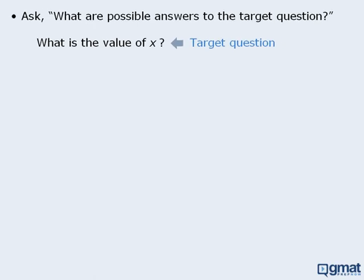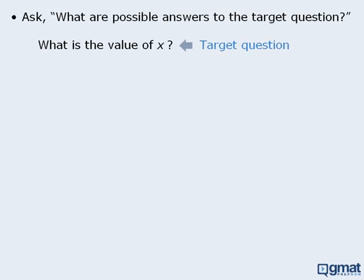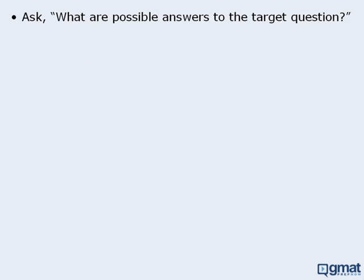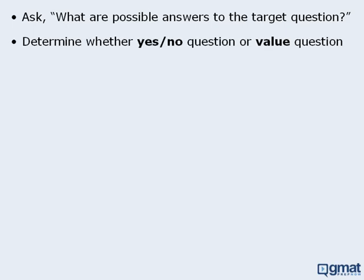One last target question: what is the value of x? Here the possible answers consist of any number. This next strategy follows from the first: determine whether the target question is a yes-no question or a value question. Every data sufficiency target question is either a yes-no question or a specific value question. For yes-no questions, you must determine whether the answer is always yes or always no. For value questions, you must determine whether there is one unique value that can be deduced using the information provided in the statements.